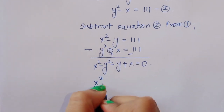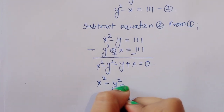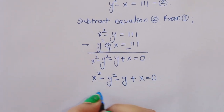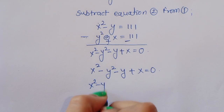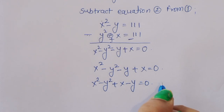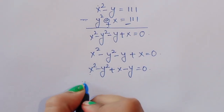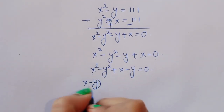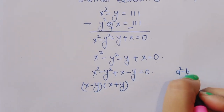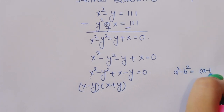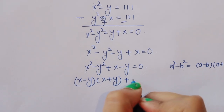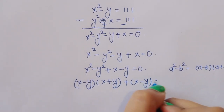So we can write this as x squared minus y squared plus x minus y is equal to 0. Now, x squared minus y squared can be written as (x minus y)(x plus y), using the formula: a squared minus b squared equals (a minus b)(a plus b). So we have (x minus y)(x plus y) plus (x minus y) equals 0.